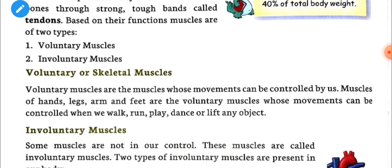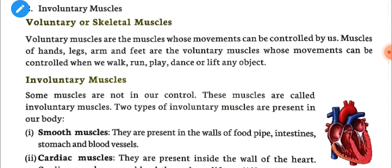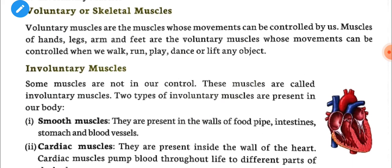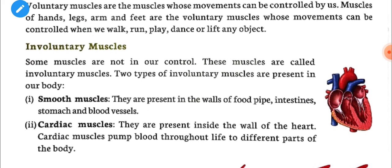Voluntary muscles are the muscles whose movements can be controlled by us. The muscles of the hands, legs, arms, and feet are voluntary muscles. Their movement can be controlled when we walk, run, play, dance, or lift any object — if we can control the movement, the muscle is voluntary.